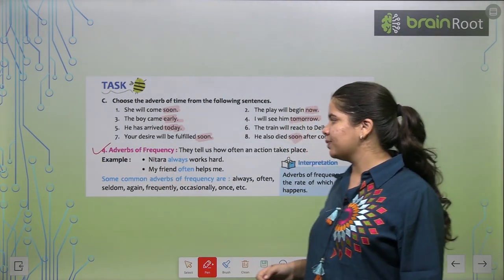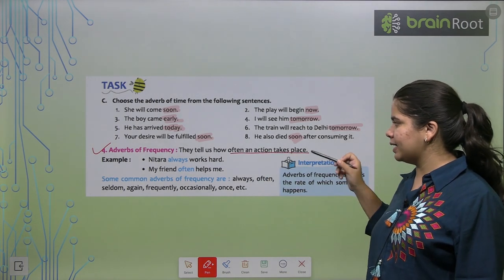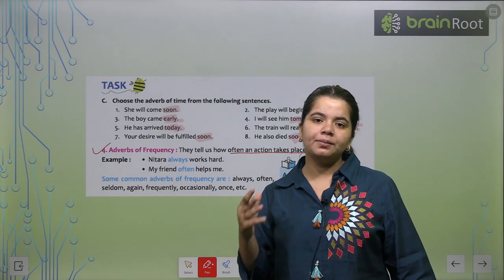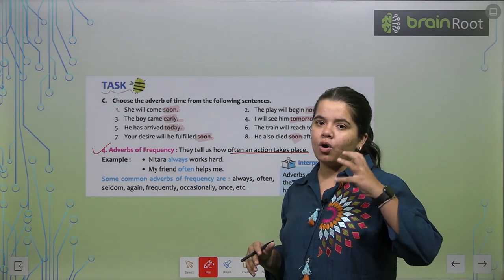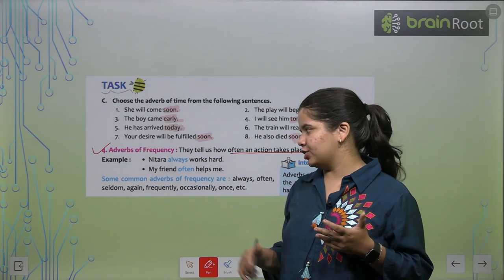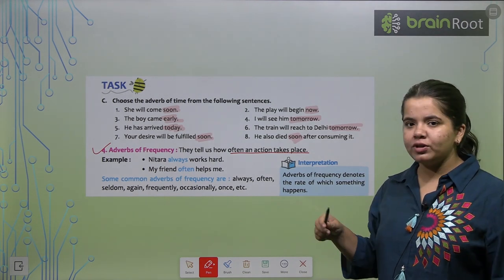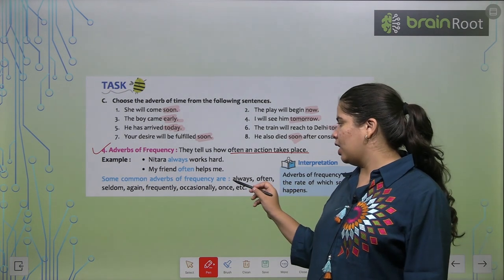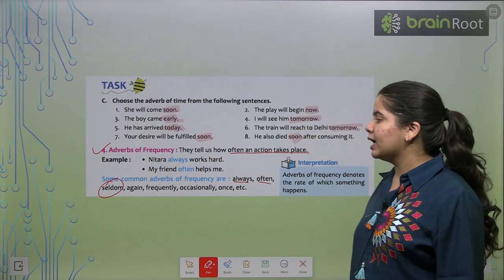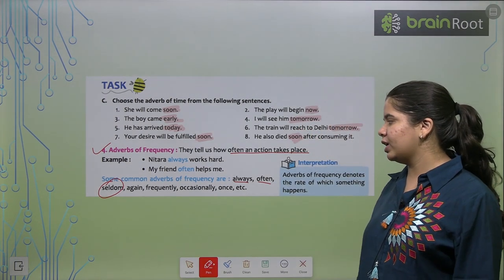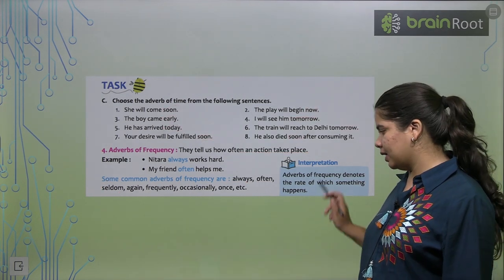Next we'll see adverbs of frequency. They let us know how often an action takes place. How often or when that action happens? What is the frequency of it happening? How often that particular action occurs? Like, Natara always works hard. Next, my friend often helps me. So these words like always, often, seldom - these words we have to pay attention to. Again, frequently, occasionally, once. These are all our common adverbs of frequency. I hope it's clear.